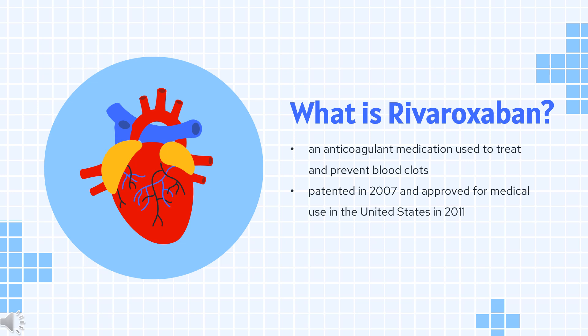Rivaroxaban was patented in 2007. In the United States, it will not be available as a generic medication until 2024. It is on the World Health Organization's list of essential medicines. In 2020, it was the 86th most commonly prescribed medication in the United States, with more than 8 million prescriptions.